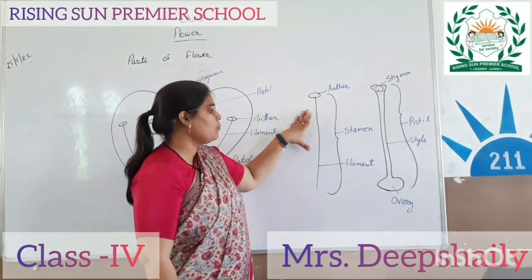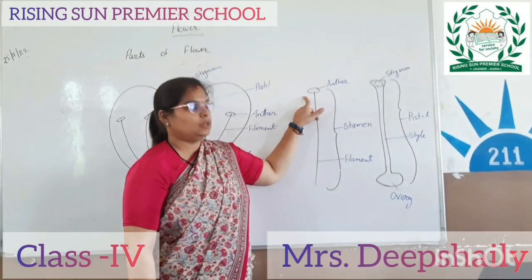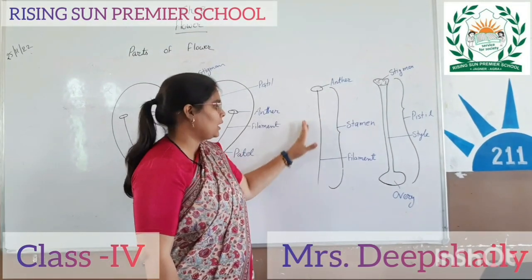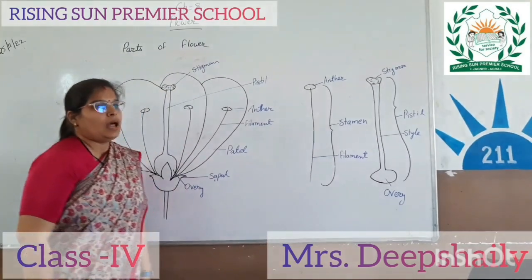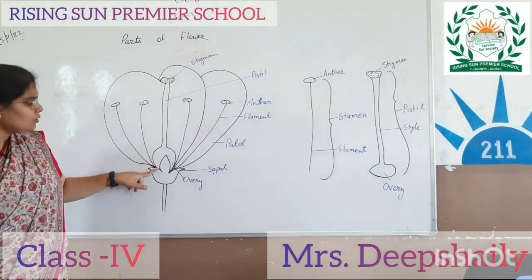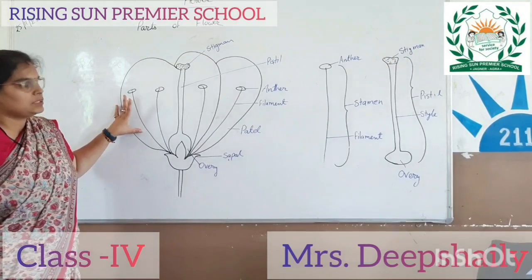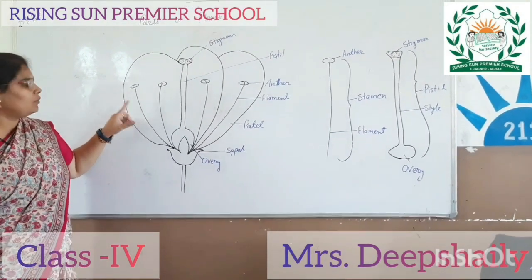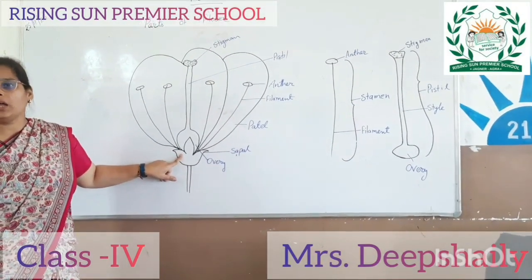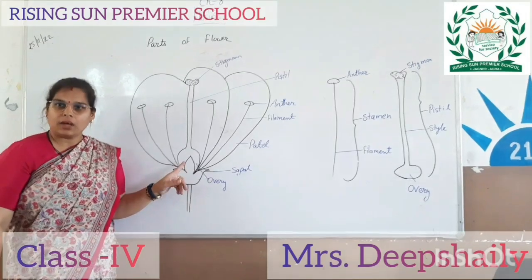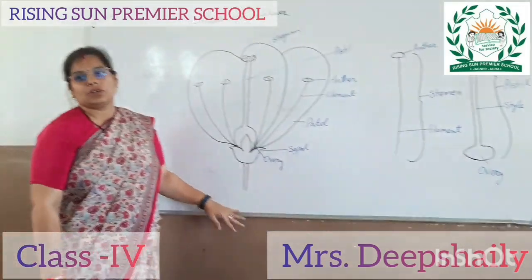The pistil has two parts, while the stamen has three different parts. The filament is part of the stamen group. These flower parts are joined together in a structure.